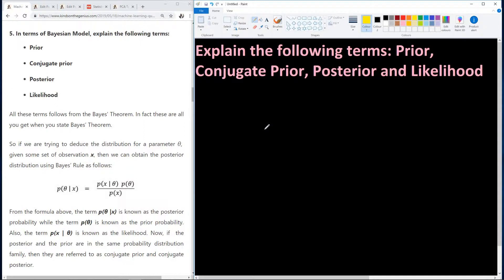So, if you are trying to deduce the distribution of a parameter theta, given some set of observations, then we can obtain the posterior distribution using Bayes' rule as follows. So basically, all of this is simple.